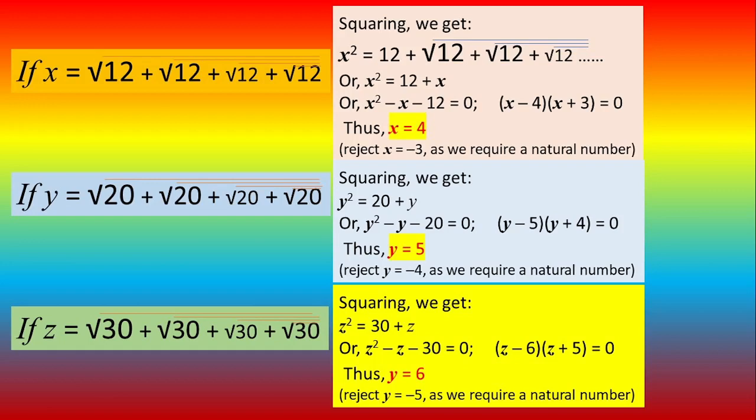Similarly, y squared, break it into factors by using the middle term. You will get 4 and 5 but minus 4 is not a natural number, we take 5. Similarly for z. So if it is a plus sign you take the larger of the two consecutive number factors and if it is minus sign you take the smaller one.